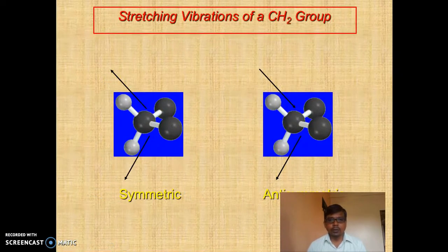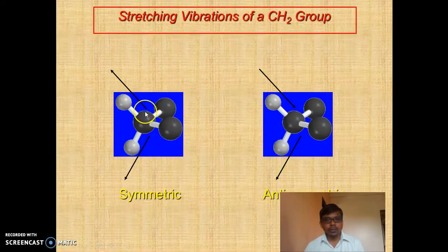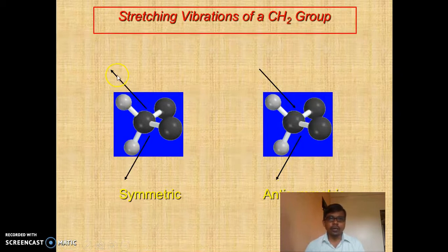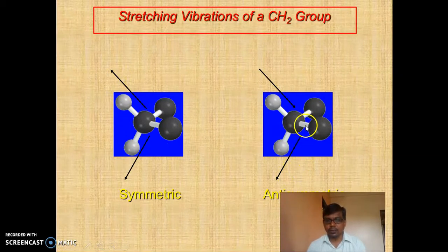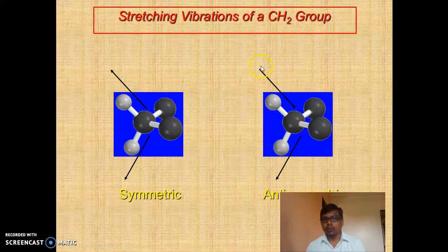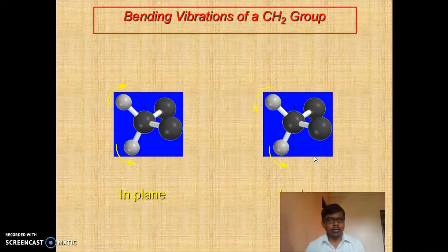Stretching vibration is divided into two parts: symmetrical stretching and anti-symmetric stretching. In symmetrical stretching, both bonds get elongated in the same direction. In asymmetric stretching, one bond gets elongated while the other gets compressed. The bond angle will remain the same in both cases.